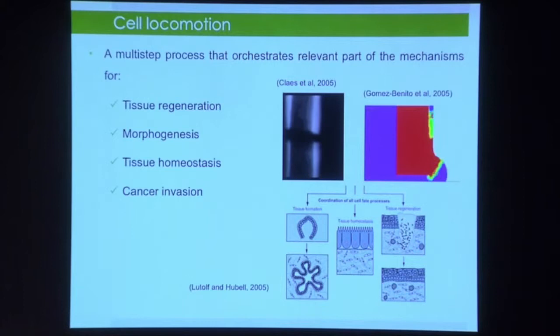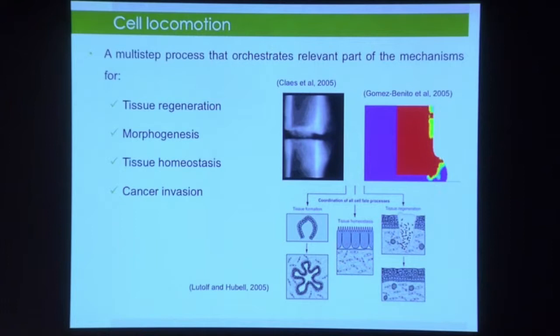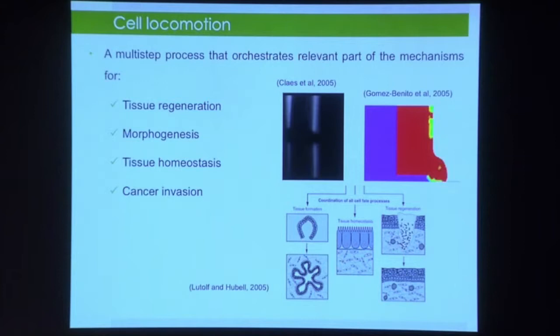If we know how migration works, we can help to regenerate tissues. But in cancer, the problem is the cell has a high capacity for migration. So our idea is to better understand how cells move in order to stop that movement. It is clear that cell migration is a relevant phenomenon both for tissue regeneration and for cancer.